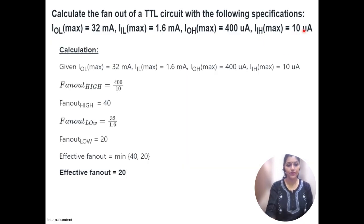Let's see how to calculate fan-out of a typical TTL circuit. I have taken this example from ISRO's test paper which was designed by Vikram Sarabai Space Center. The question is how to calculate fan-out of a TTL circuit with the following specifications: IOL(max) that is low level output current, IIL(max) that is low level input current, IOH(max) that is high level output current, and IIH(max) that is high level input current.